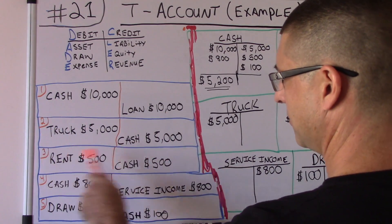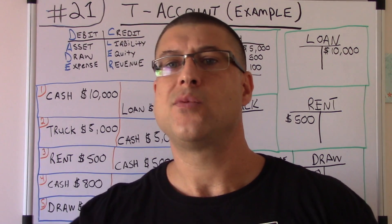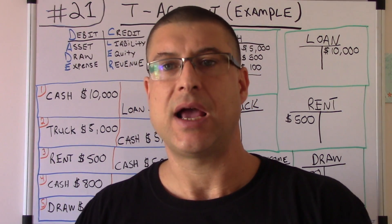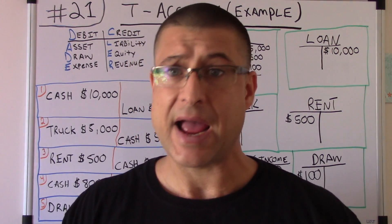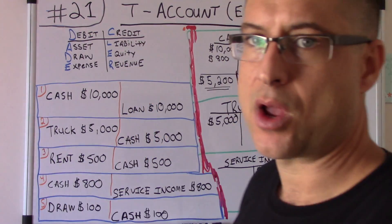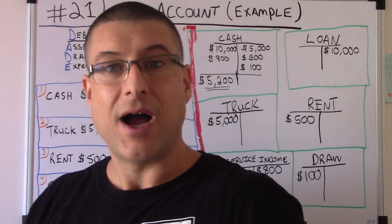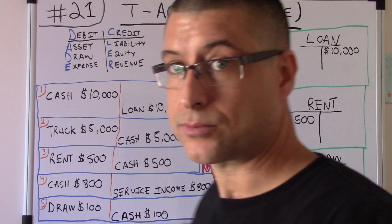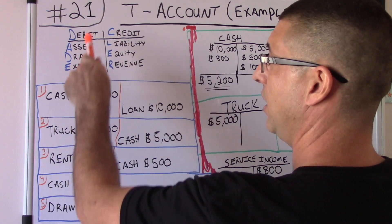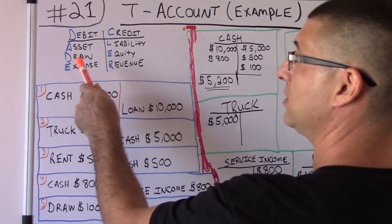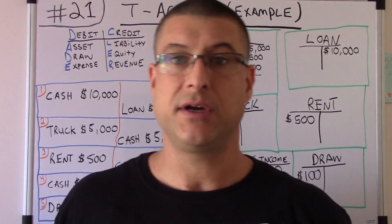These journal entries come from Accounting for Beginners number 4. If you want to know how I got these journal entries — how I determined whether something is a debit or a credit, or whether it's an asset or a liability — you may want to watch number 4. Also, this is my DC a blur thing: debit, credit, asset, draw, expense, liability, equity, revenue. I have a lot of videos on it — you may want to watch my accounting series.